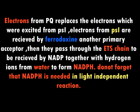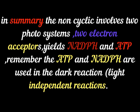In summary: in non-cyclic photophosphorylation there are two photosystems — Photosystem 1 at 700 nanometers and Photosystem 2 at 680 nanometers. There are two primary electron acceptors: plastoquinone and ferredoxin. The products are ATP and NADPH. We will later compare cyclic photophosphorylation and non-cyclic photophosphorylation.